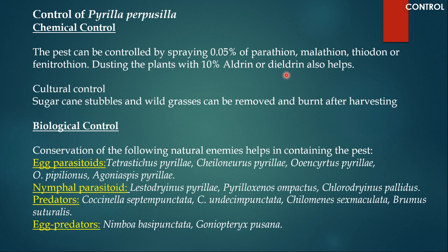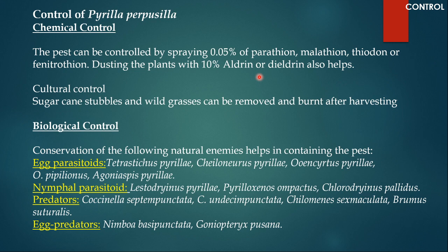For cultural control, sugarcane stubbles and wild grasses can be removed and burned after harvesting. When sugarcane crops are harvested, the stubbles left in the field can be collected and removed so that Pyrilla purpusilla does not remain there. Burning destroys any adults and nymphs remaining with the stubbles. Wild grasses, which are alternate hosts for Pyrilla purpusilla when sugarcane is not available, should also be removed from the field.